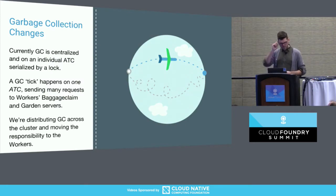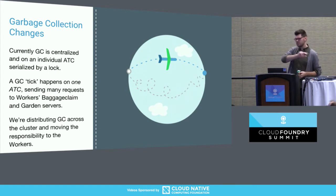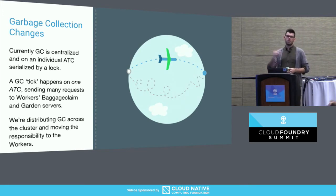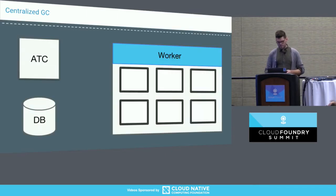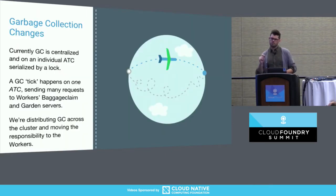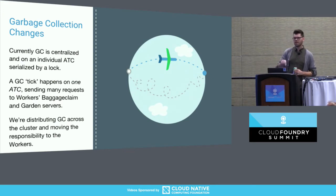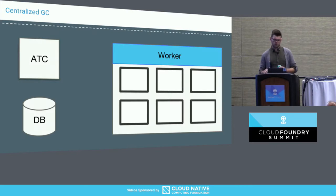So we're changing the way that garbage collection works. This seems totally tangential to how it fits with Kubernetes, but I'll get there. Currently, GC is kind of centralized on an individual ATC. That ATC goes out to all of the workers and removes anything it doesn't need — a build has finished, containers can go away, an old build has gone green and it's gone.